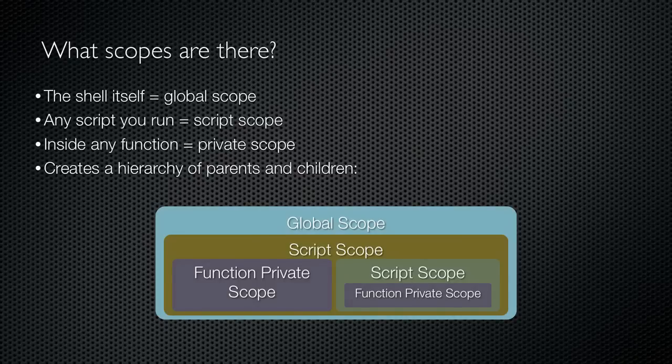PowerShell starts with the global scope, which is the shell itself. This is the top-level scope and is the parent to all other scopes. Within that scope, you might run a script, which generates a new scope for that script. That script scope is a child of the global scope. The script can run other scripts or contain functions, each of which have their own scopes. This creates a hierarchy of parent scopes and child scopes, and that hierarchy plays a major role in how PowerShell handles data such as variables.